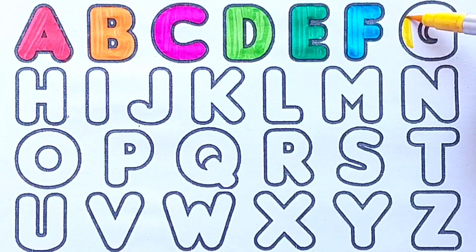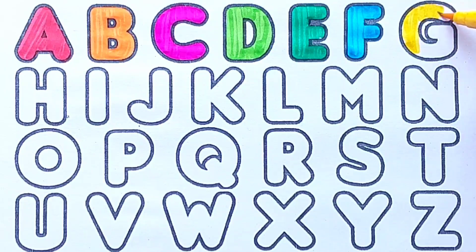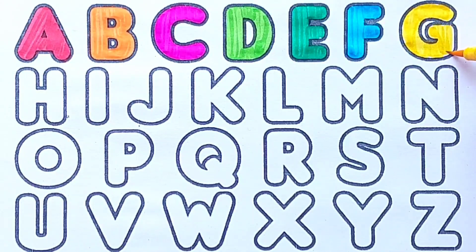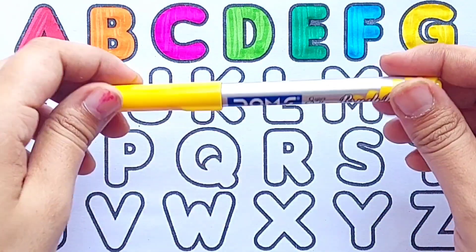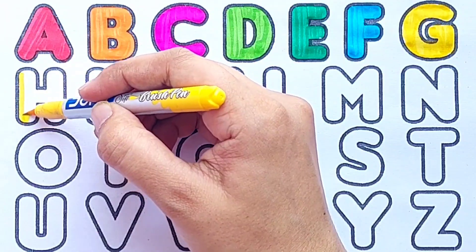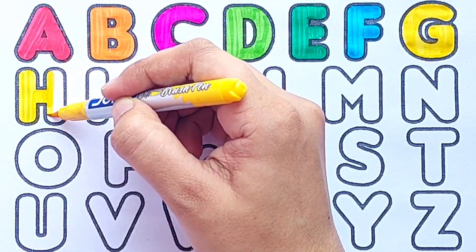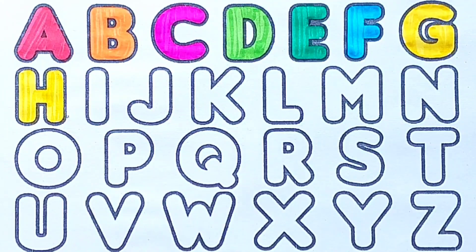Yellow color G, G for Grapes. Yellow color H, H for Hen.